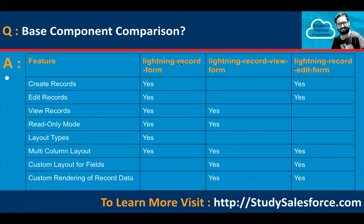Base component comparison: lightning-record-form, lightning-record-view-form, and lightning-record-edit-form. Create record is supported by lightning-record-form and lightning-record-edit-form, but not lightning-record-view-form. Edit is the same. View record is supported by lightning-record-form and lightning-record-view-form, not lightning-record-edit-form. Read-only mode is available with the first two. Layout type is available only with lightning-record-form. Multi-column layout is available with all three. Custom layout for fields and custom rendering of record data are available with lightning-record-view-form and lightning-record-edit-form.